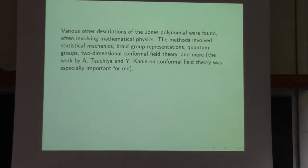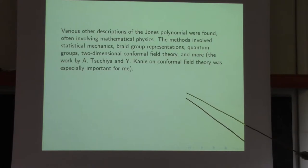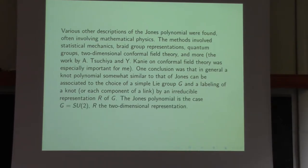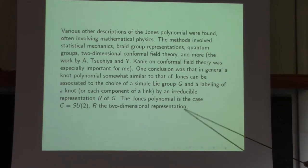Soon after Jones discovered the Jones polynomial, many other descriptions were found using a variety of methods, from statistical mechanics to conformal field theory. Among these, the ones most useful to me were the work of Tsuchiya and Kanie on conformal field theory. One thing I learned from this work was that a knot polynomial similar to that of Jones can be associated to any simple Lie group G and any choice of irreducible representation R of G. The original Jones polynomial is the case where the group G is SU(2) and R is the two-dimensional representation.